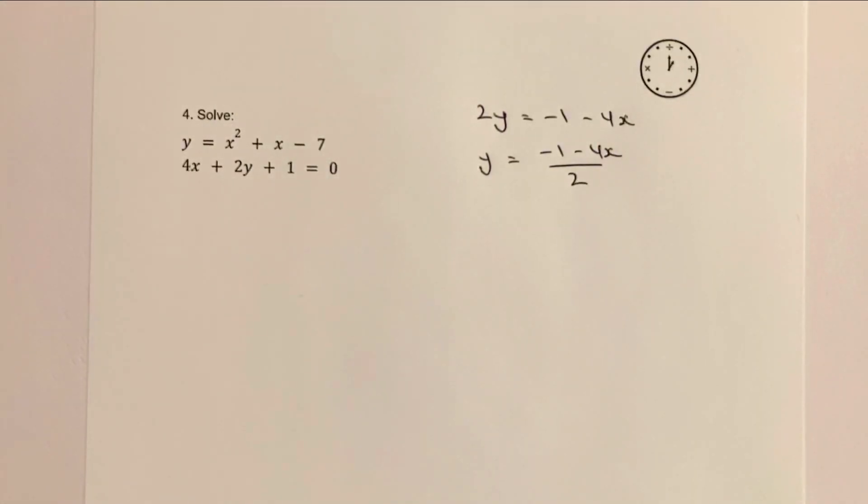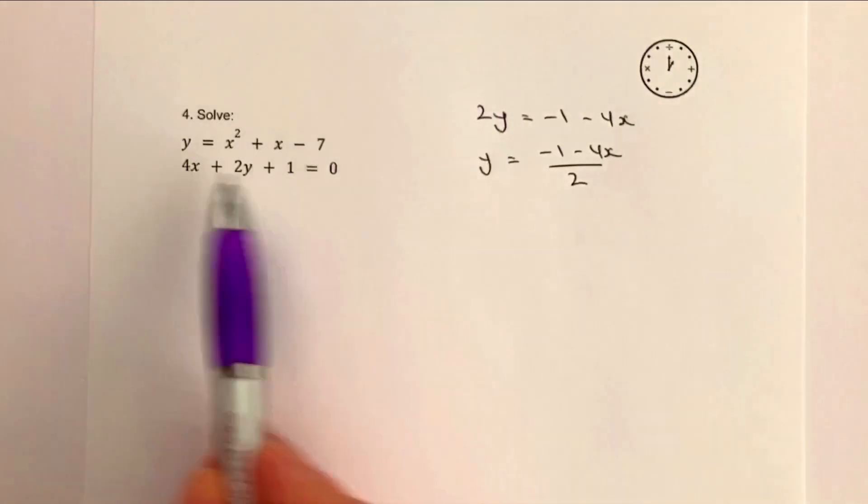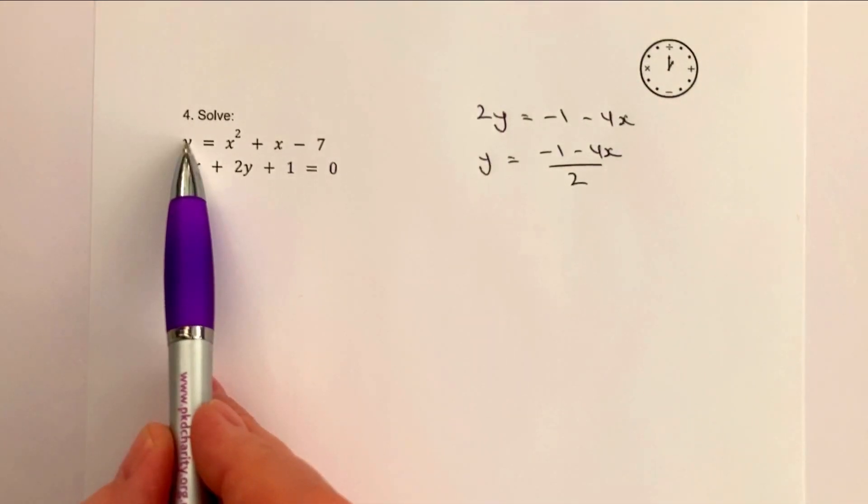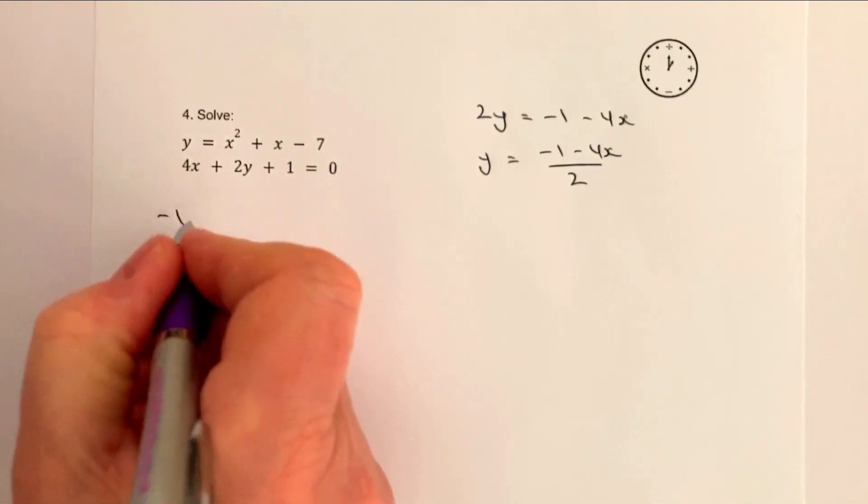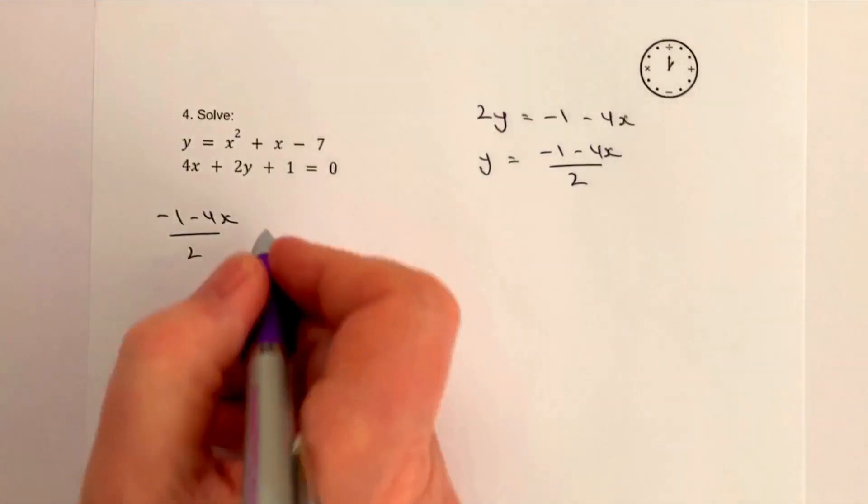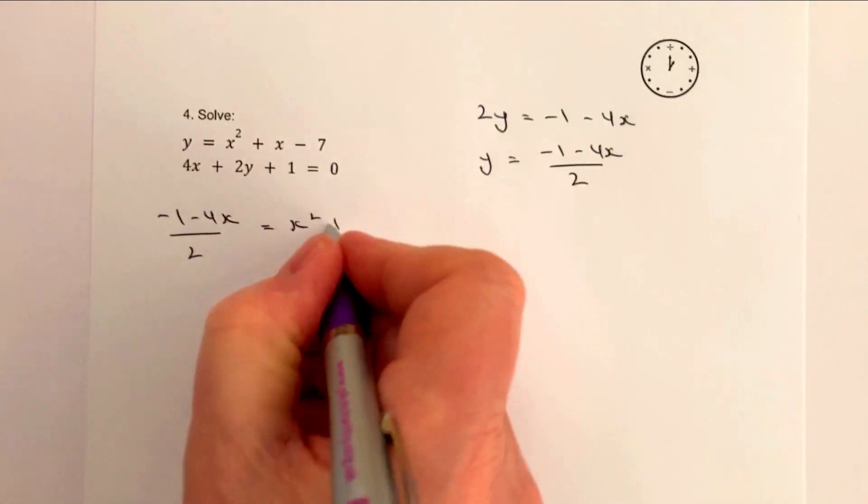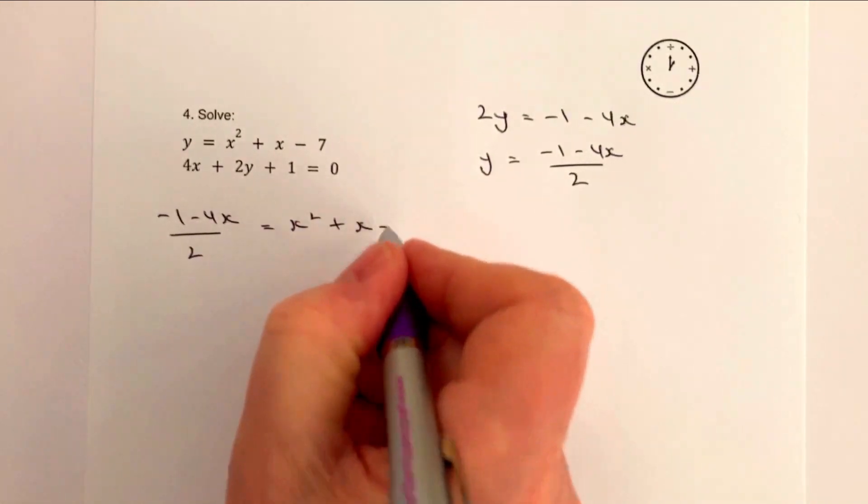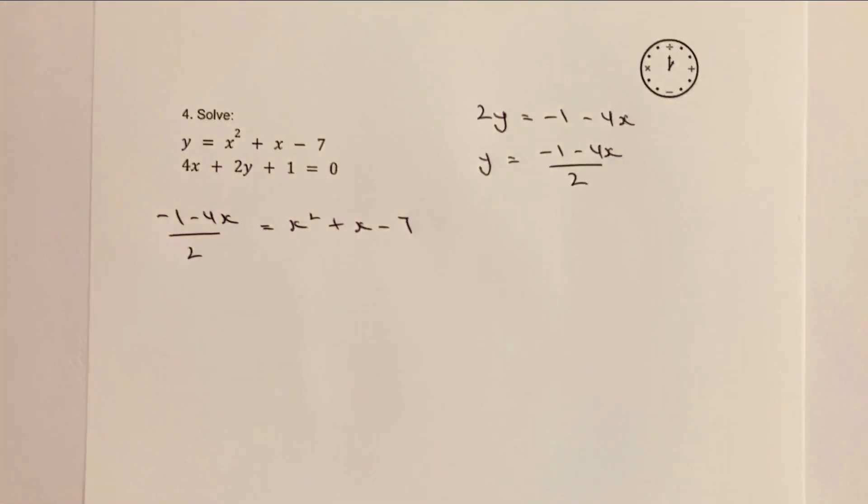So it's going to be very awkward because we're going to take this and we're going to put it there as substitute for x. So what we'll end up with is minus 1 minus 4x all divided by 2, and that equals x squared plus x minus 7. Okay, and then really it's a case of substituting and solving that for x.